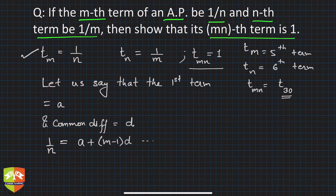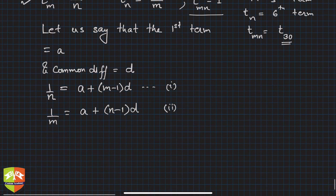Similarly, 1/m is equal to first term plus (n-1)d, right? Because this was m-th term and the second is n-th term. This is equation 2.